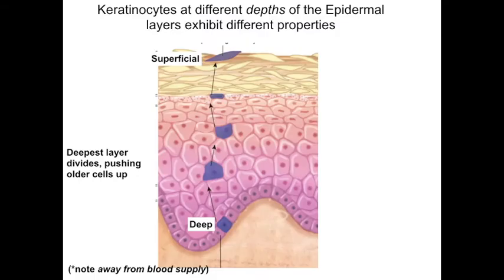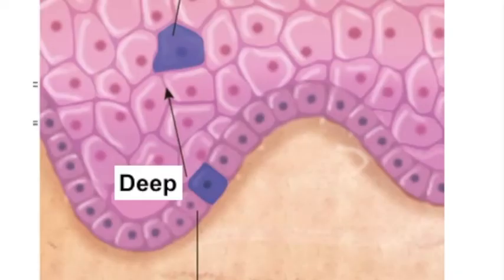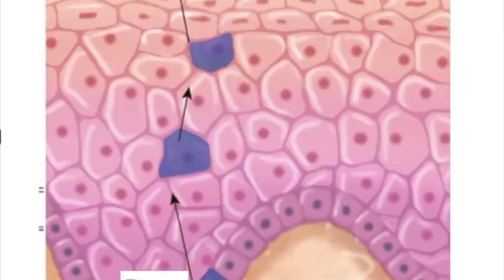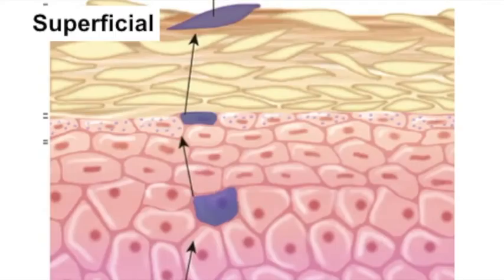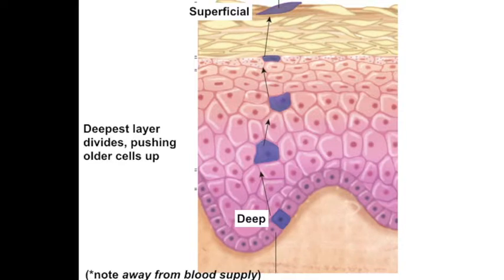The keratinocytes at all different levels of the epidermis originate from the deepest layer. These cells divide and, as they do so, are pushed superficially and change their properties along the way. You can look at a picture of the epidermis as a snapshot or as a sequence of stages as cells move more superficially. Those deepest layer cells are continuously dividing, and the most superficial cells are all dead.